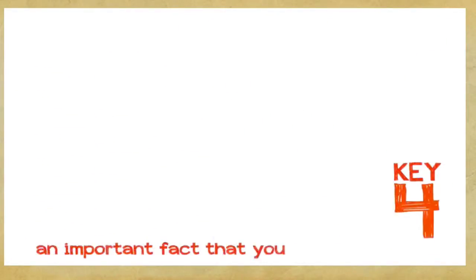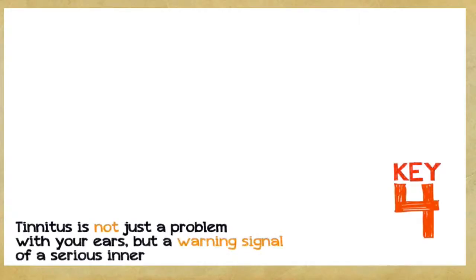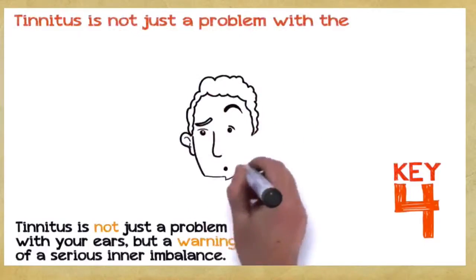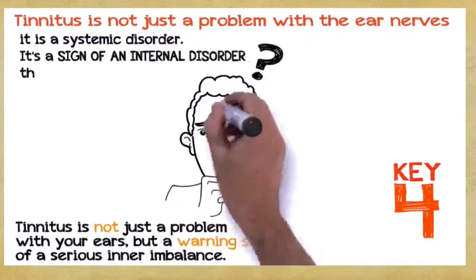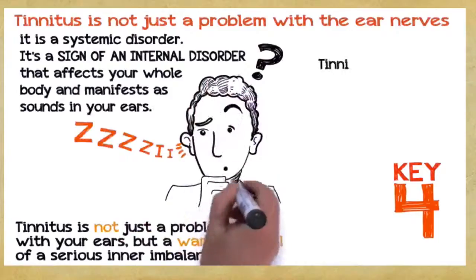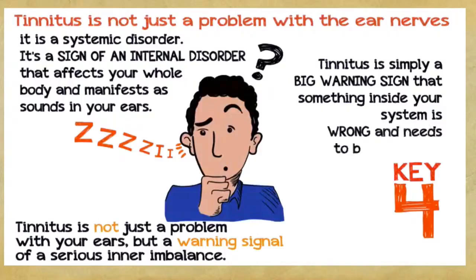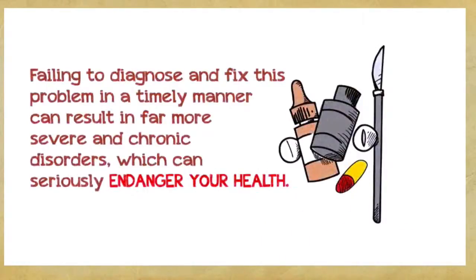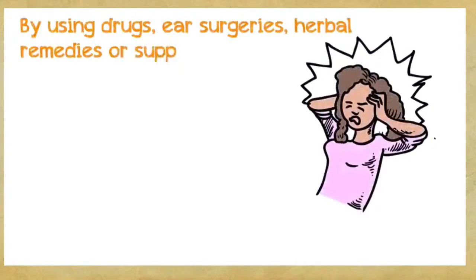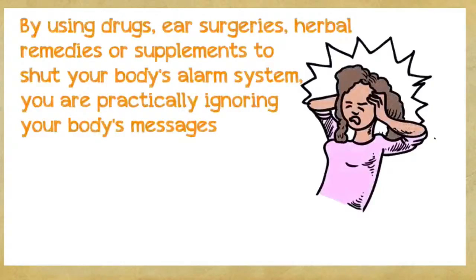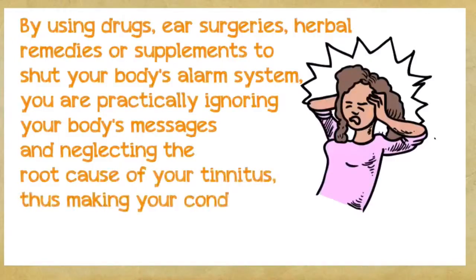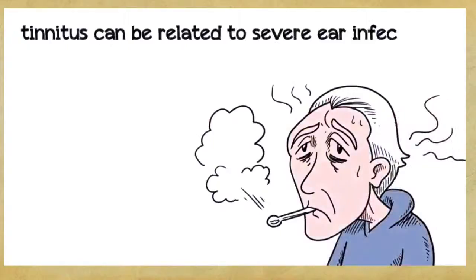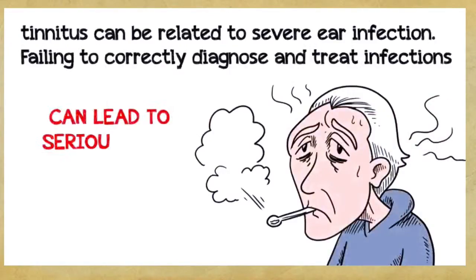Key number four: This is very important if you want to save hundreds or thousands of dollars. Tinnitus is not just a problem with your ears, but a warning signal of a serious inner imbalance. In the vast majority of cases, tinnitus is not just an ear nerve problem, it's a systemic disorder. It's a sign of an internal disorder that manifests as sounds in your ears. Tinnitus is a big warning sign that something inside your system needs to be corrected. Failing to diagnose this can result in far more severe chronic disorders. For example, tinnitus can be related to severe ear infection, and failing to treat infections can lead to serious long-term health consequences.